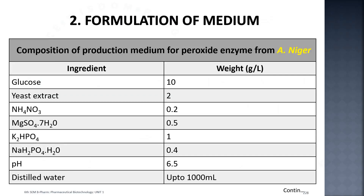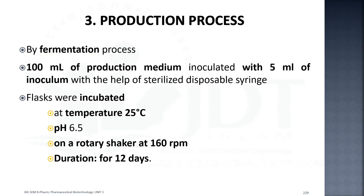An example culture media for peroxidase enzyme production using Aspergillus niger contains: glucose, yeast extract, ammonium nitrate, magnesium sulfate, potassium hydrogen phosphate, and sodium hydrogen phosphate. The pH is adjusted to 6.5 and distilled water is added up to 1000 ml.